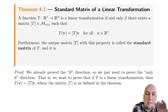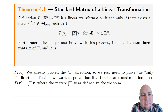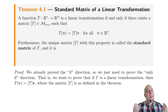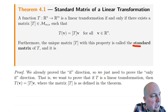Here's the setup. Suppose you've got some function sending n-dimensional space to m-dimensional space. That function is a linear transformation if and only if there exists some matrix such that the linear transformation applied to V equals matrix times V, where we're thinking of V as a column vector so the matrix multiplication makes sense. The funky square brackets around T — that notation just means whatever matrix makes this true. We call it the standard matrix of that linear transformation T.